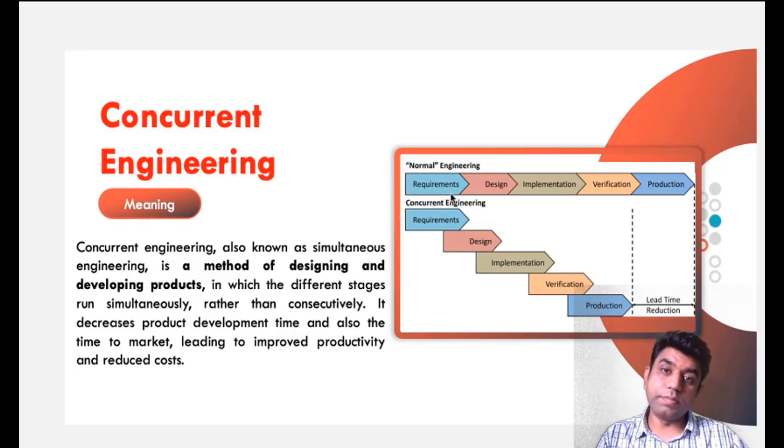If we talk about a normal engineering perspective, if you want to develop any product, what is the normal cycle? Based on the customer requirement, we are designing some component. So the design stage will get started. Then we implement that design, means we are producing that.